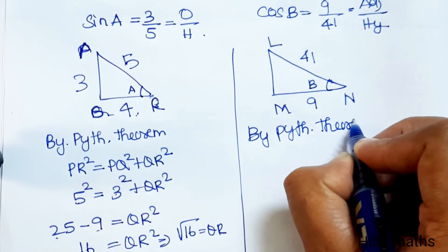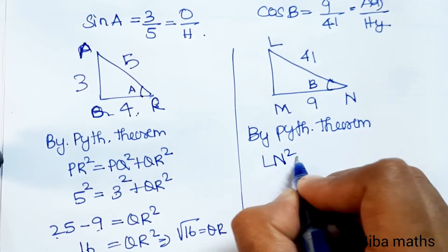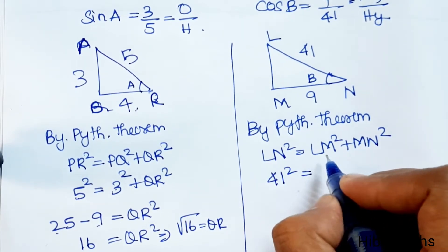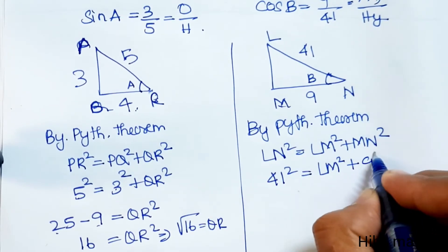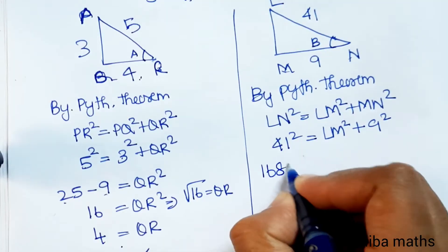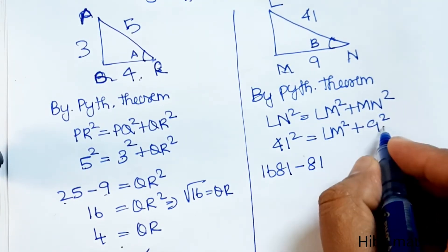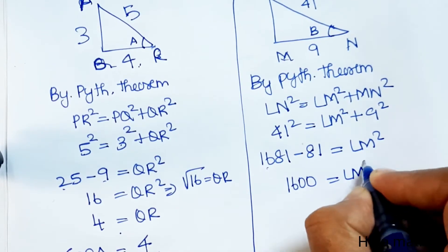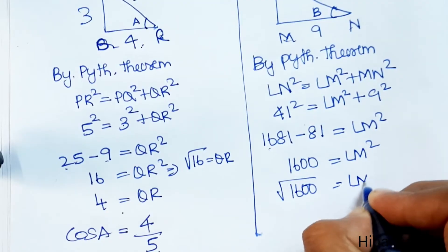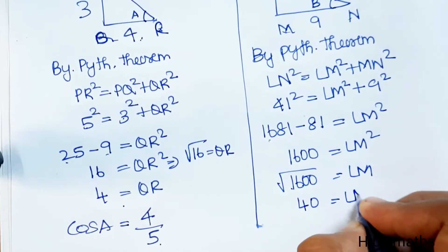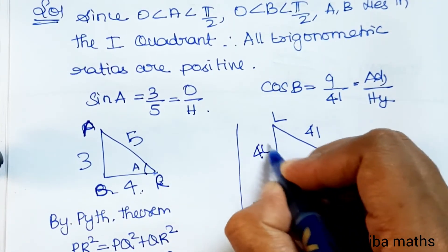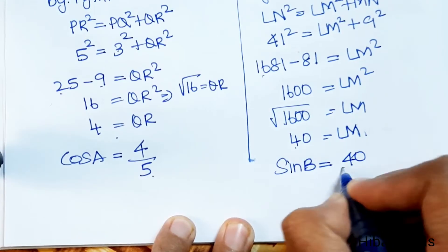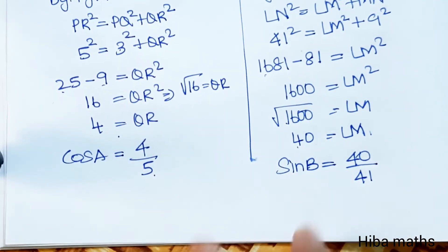For the second triangle LMN with angle B, by Pythagoras theorem: LN squared equals LM squared plus MN squared. 41 squared equals LM squared plus 9 squared. 1681 minus 81 equals LM squared. 1600 equals LM squared. So LM equals 40. Therefore sin B equals opposite by hypotenuse, which is 40 by 41.